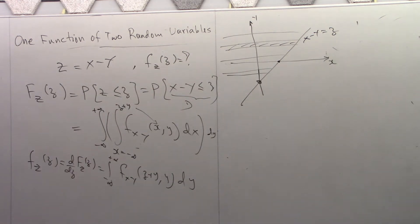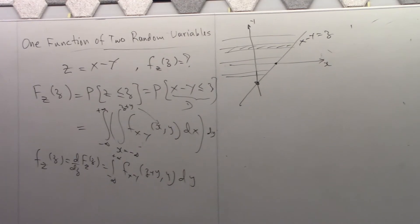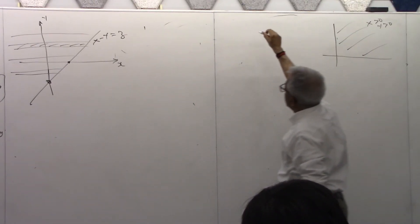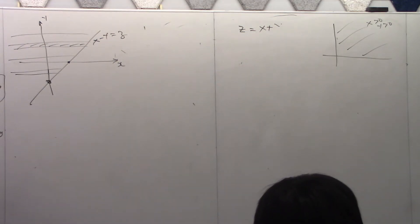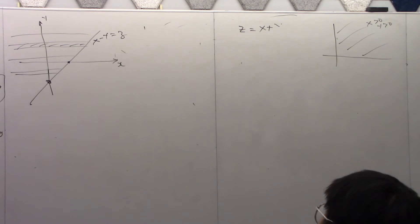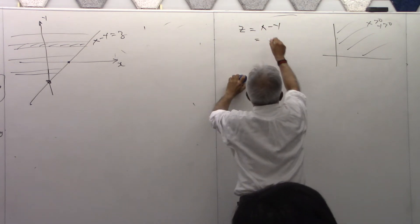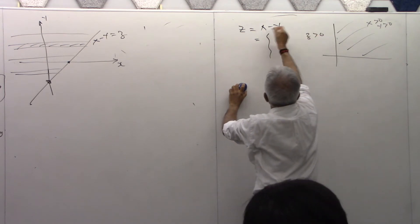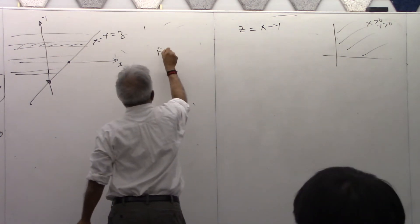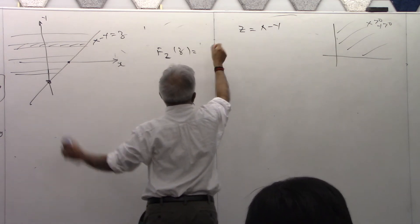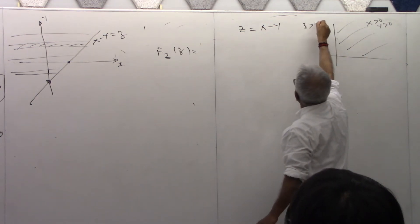Now let's do the exponential problem. I want to do the same problem but with two non-negative random variables. Think for a minute — if X and Y are non-negative, what happens to X minus Y? X is positive, Y is positive. How about X minus Y? There are two cases. When Z is positive versus Z negative — so F_Z(z) has exactly these two cases.